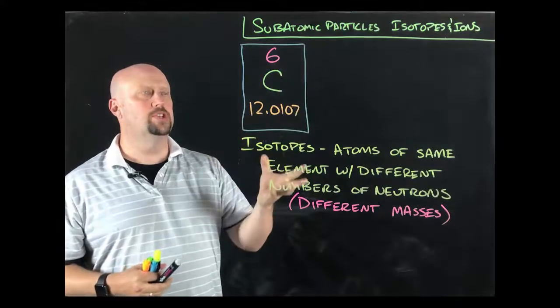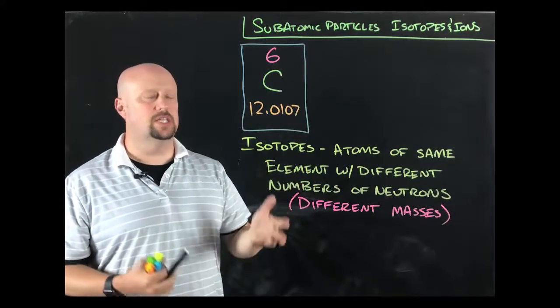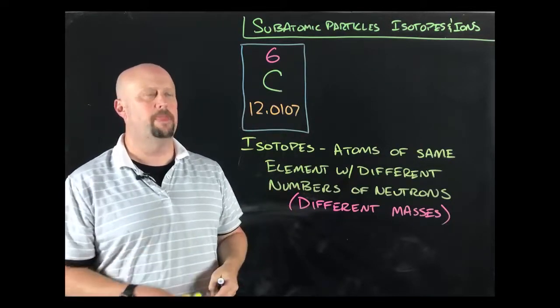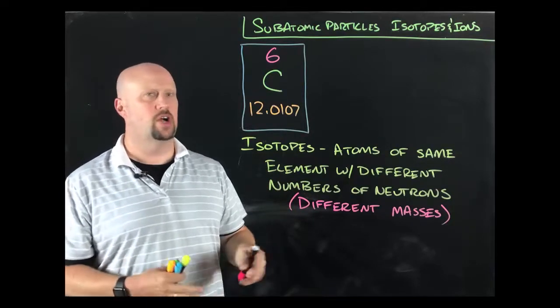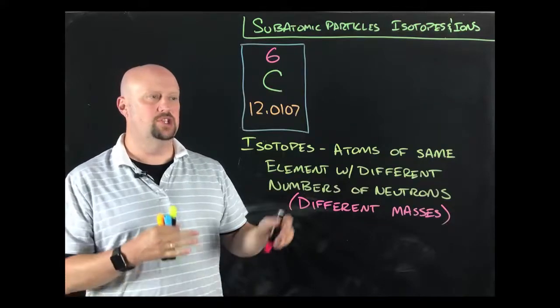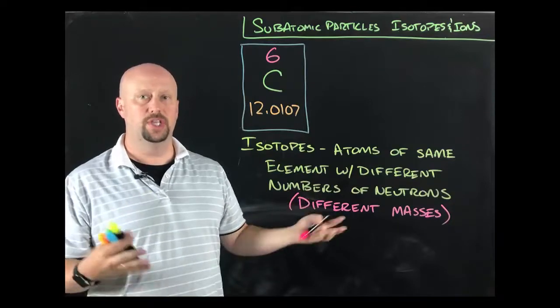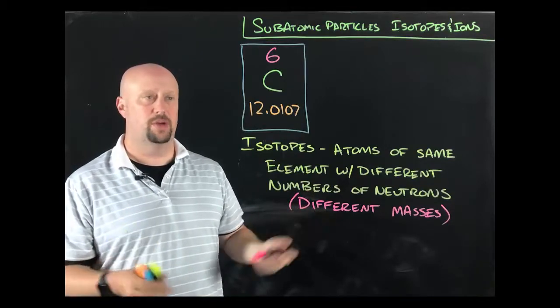All right, kiddos. Welcome aboard for part two of subatomic particles. We're going to talk in this video about isotopes and ions, where we're still talking about our protons, neutrons, and electrons, but in a couple of different ways to show that they're not always exactly the same as they were in Dalton's original atomic theory.